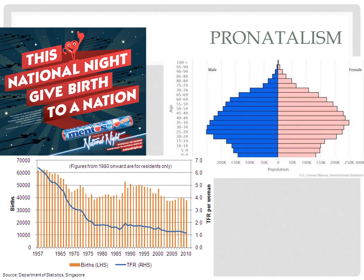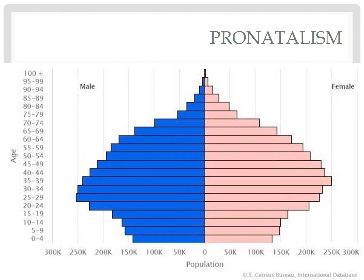One of the most interesting case studies of population policies is Singapore, a small island state in Southeast Asia. In the 1960s, economic growth led to a population boom, so the government instituted antinatalist policies — making contraceptives available at low cost, creating family planning clinics, and running a media campaign promoting smaller families. But in the 1980s, it became clear that the antinatalist policies were too effective. There were concerns about labor force shortages, a high elderly dependency ratio, and increasing costs of retirement and healthcare for the elderly.